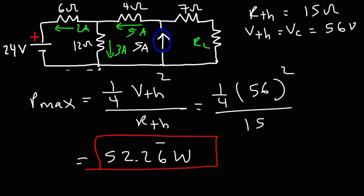The Thevenin resistance is 15 ohms and the Thevenin voltage is 56 volts. That's it for this video — now you know how to solve problems related to the maximum power transfer theorem.